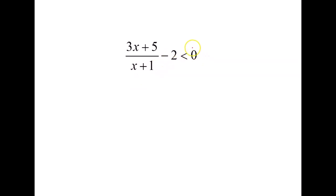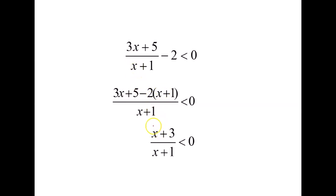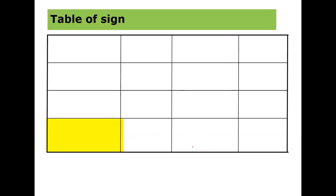The correct first step is to move the 2 to the left and make the right-hand side equal to zero. Then we equate the denominators on the left-hand side, simplify the numerator, and we get (x+3)/(x+1) < 0. I call this the standard form, where the left-hand side consists of a linear expression over a linear expression, and the right-hand side equals zero.